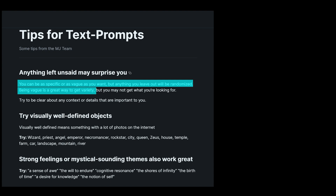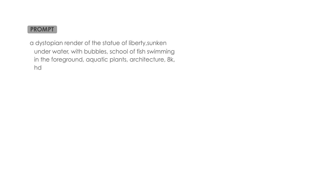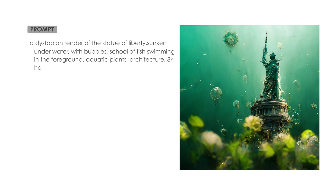Being vague is a great way to get variety, but you may not get what you want. Try to be clear about any context or details that are important to you. So let's try to be more specific by typing: 'a dystopian render of the Statue of Liberty sunken underwater with bubbles, a school of fish swimming in the foreground, aquatic plants, architecture, 8K HD.' After typing this and clicking upscale, this is the result that I got.